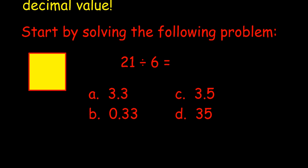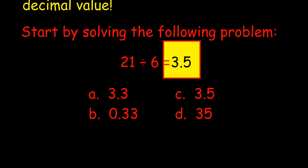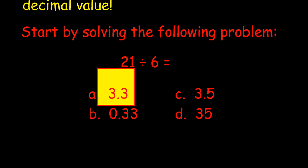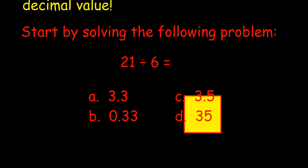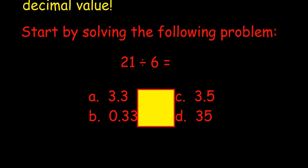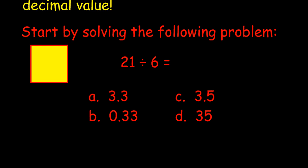If you got the answer 3 and 5 tenths, you are correct. Now, for those of you that got the answer 3 and 3 tenths, I'm going to show you where you made your mistake. Also, some of you may have gotten the answer 33 tenths - you made two mistakes. Or you may have gotten 35 as your answer. There you simply misplaced your decimal.